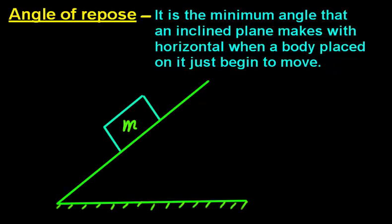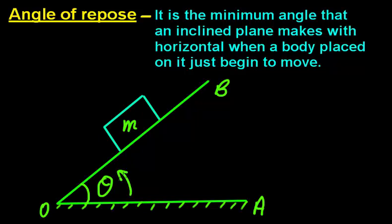Suppose this box is placed on an inclined plane — this is the inclined plane OB, and O is the horizontal ground, so OB is making angle theta with the ground. If we gradually increase the angle of OB in the anti-clockwise direction by moving the inclined plane,